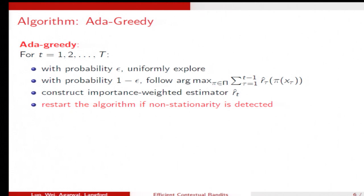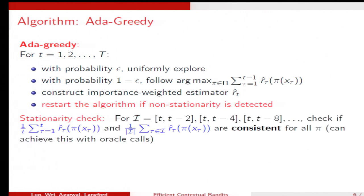The first algorithm we have is based on epsilon greedy, but we do some test with the detection. The test is like this. We computed two quantities. One is this, one is this. This is average reward over the whole horizon.